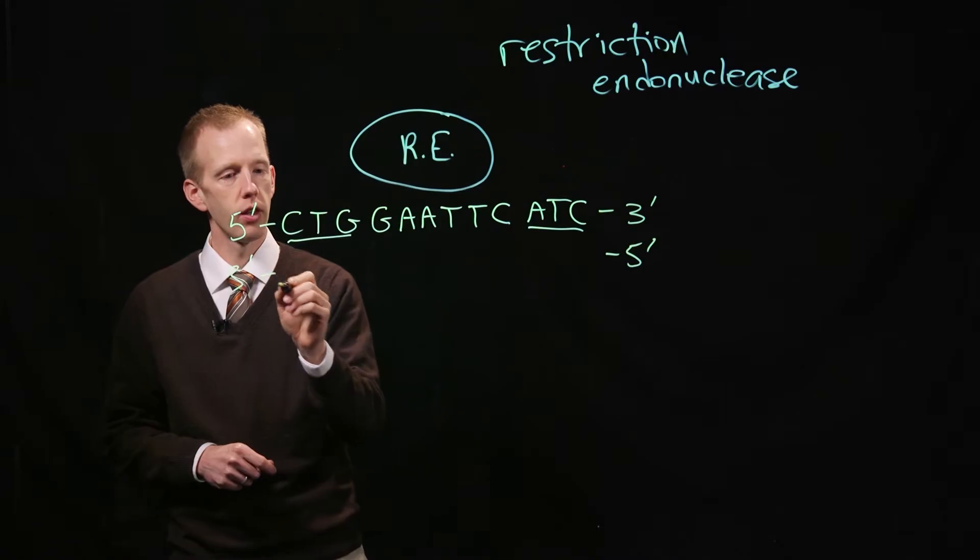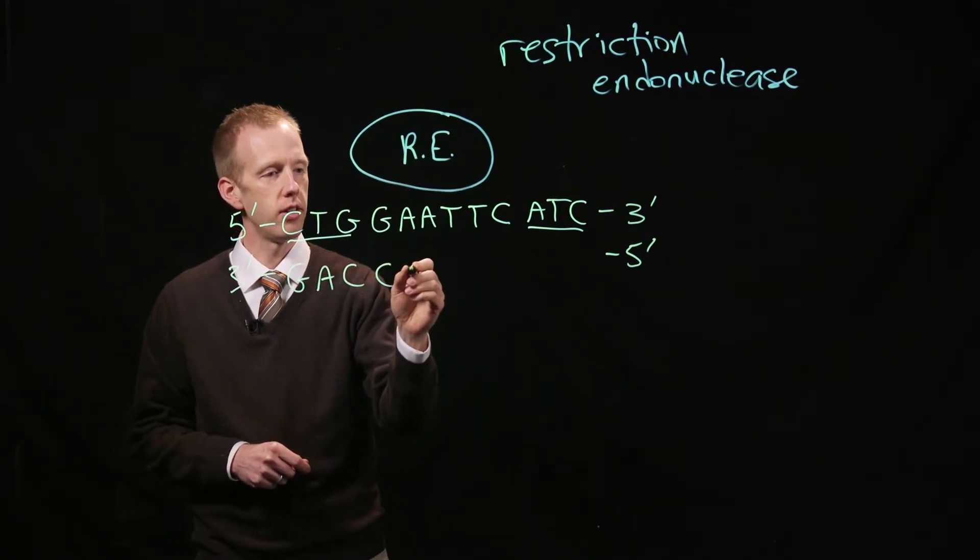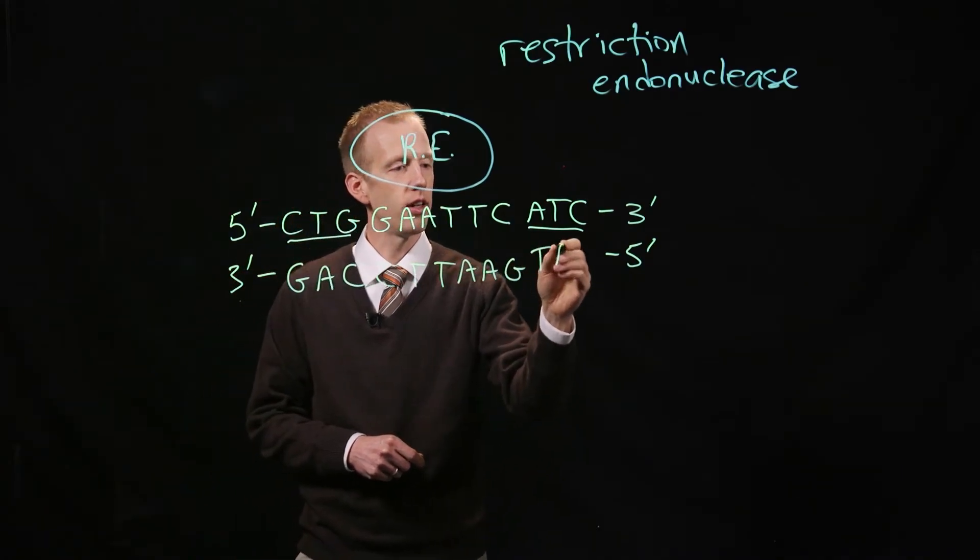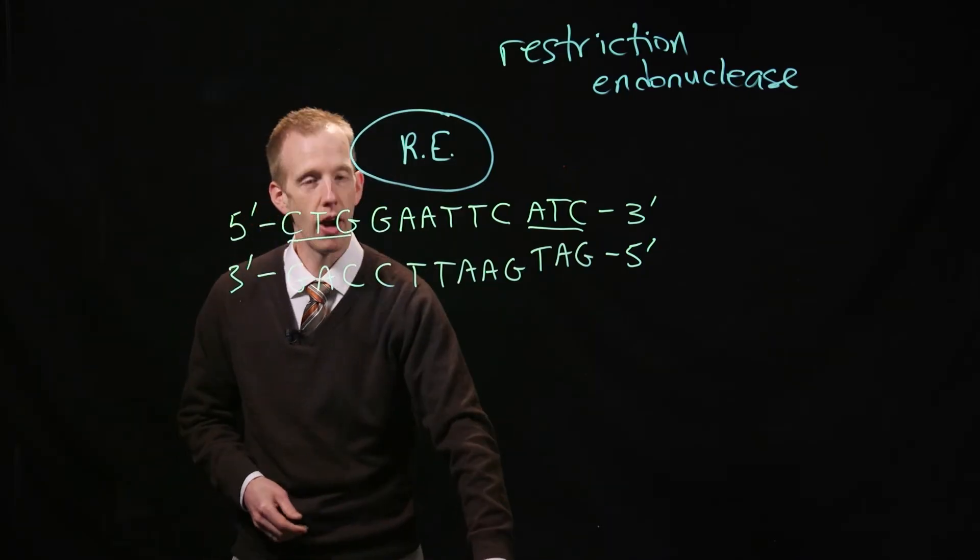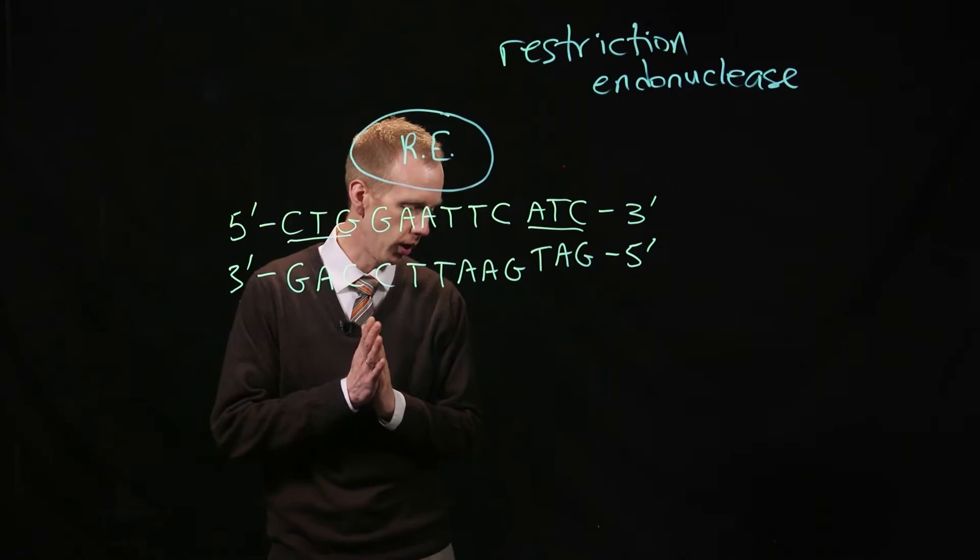If we wrote in the complementary sequence, we would have G-A-C, C-T-T-A-A-G, T-A-G. Because we know that nucleotides pair up according to hydrogen bonding, C's pairing with G's and A's pairing with T's.